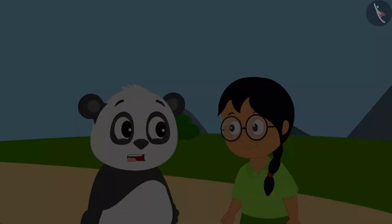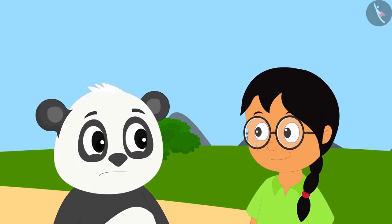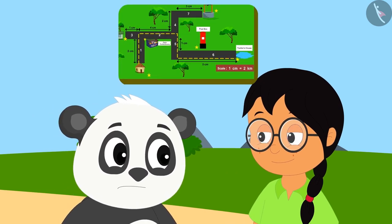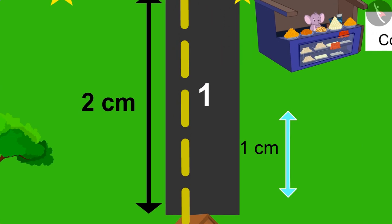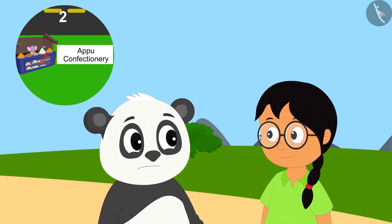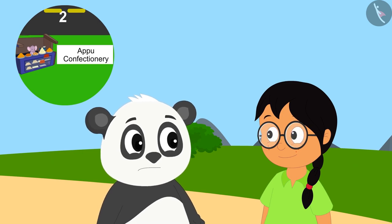Golu was shocked to hear this. He told Meenu that he had walked 1 cm on road number 1 as per the map given by Uncle, but he could not see Appu's confectionery far and wide.